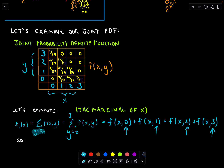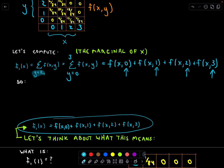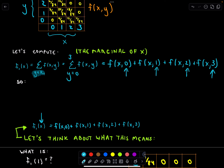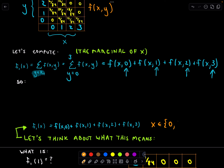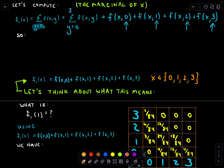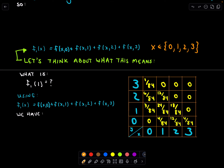Let's interpret what this marginal of x is actually telling us. We can plug in different values of x. In our situation, x would be anywhere from 0, 1, 2, up to 3 — we could select anywhere from 0 PhDs up to 3 PhDs getting promoted. So let's plug in x equals 1. If we plug in x = 1 into our formula, we're computing f(1,0) + f(1,1) + f(1,2) + f(1,3), just letting y vary over 0, 1, 2, 3.